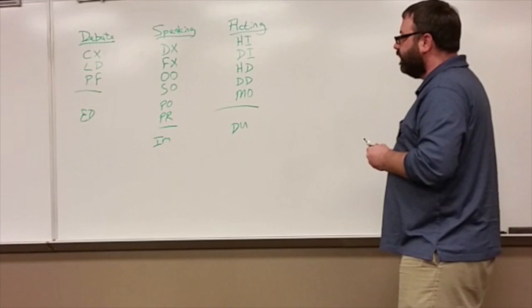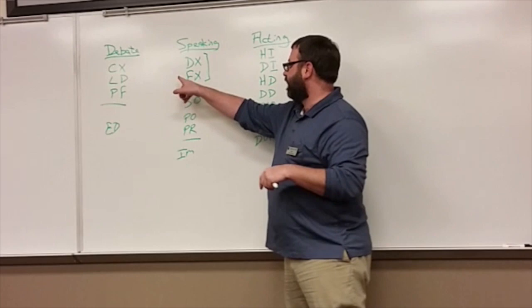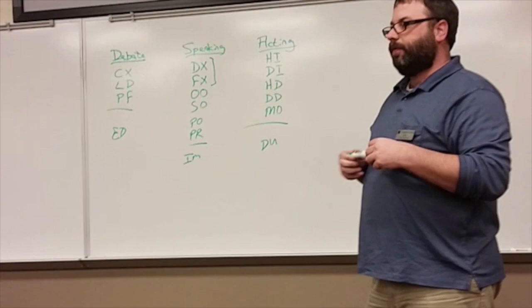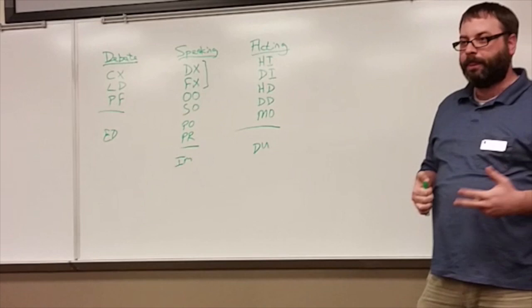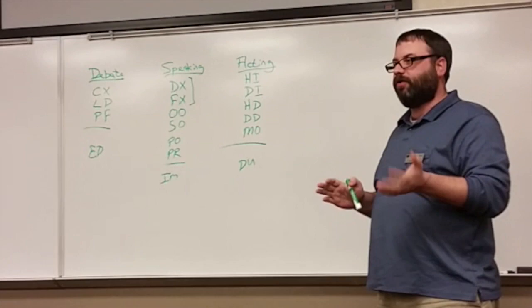Specifically, we have in our public speaking category of events, the first events are extemporaneous speaking - domestic and foreign extemporaneous speaking. This is an event where the kids get a topic about a current event and they have a half an hour to prepare a speech on that topic. At the end of the half hour they're sent to their room to compete and give their speech. Those speeches go up to seven minutes. As long as you're keeping track of the times, that's all you really need to do.